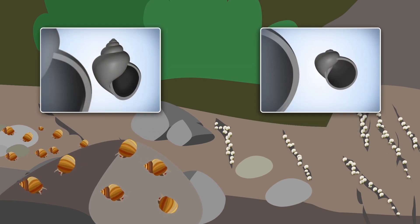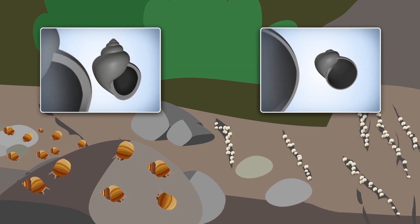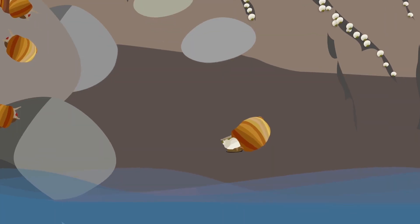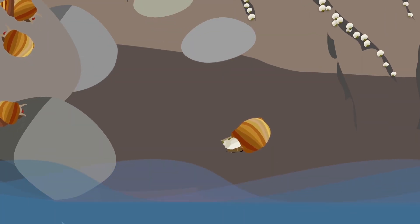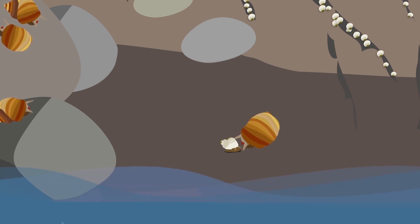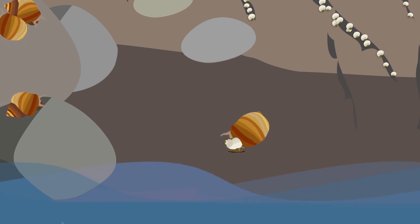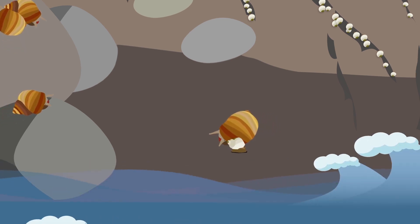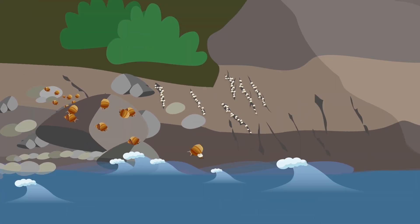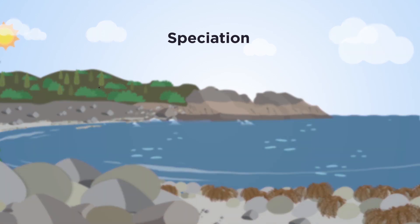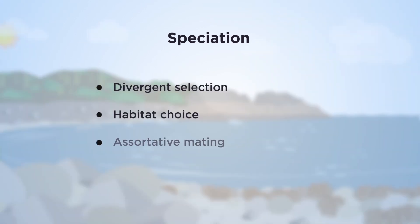Will these populations evolve into separate species? All the effects we've looked at help to move them in that direction. In some populations they work together and speciation may be completed.